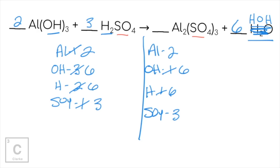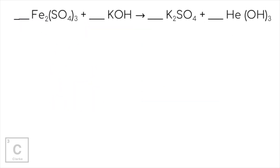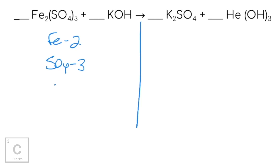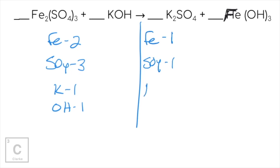Remember, this was two tips in one: if you have a polyatomic ion, leave it together if it's on both sides; and if you've got H and OH on one side, go ahead and change that water to HOH. Here's another example where we can leave polyatomic ions together. We have iron — two of them — and we'll leave sulfate together because it stays together on the other side. We have three sulfates, one K, and one OH.